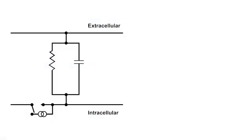Let's examine the electrical circuit basis of this property. The membrane can be modeled as two parallel paths, a capacitance path and a resistance path.